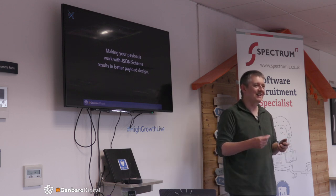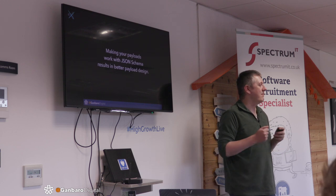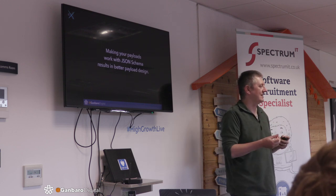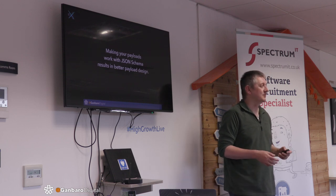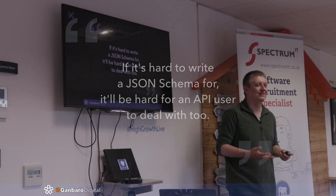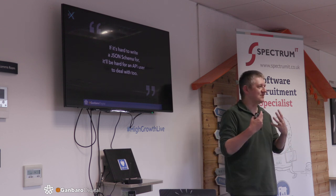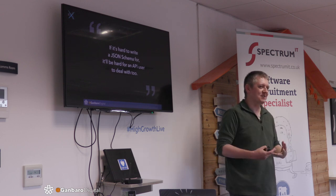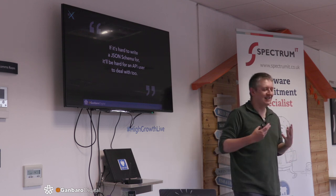By designing an API and the schema side by side, JSON Schema acts almost like a design constraint and stops you coming up with bonkers API designs — because you go, 'I don't know how to write a schema for this.' If it's hard to write a schema for, what's it going to be like for the poor person at the other end who's got to work with your API? It's a bit like writing unit tests alongside code — you end up with better code. Same mechanism; it's very healthy.